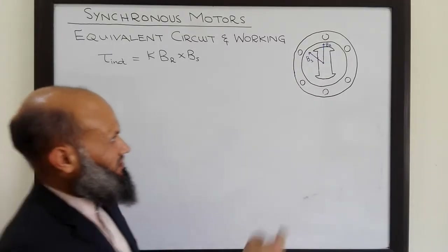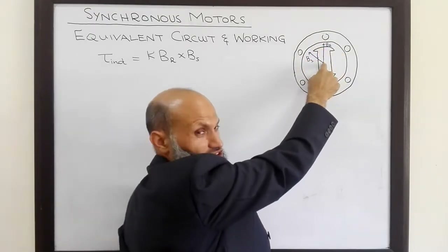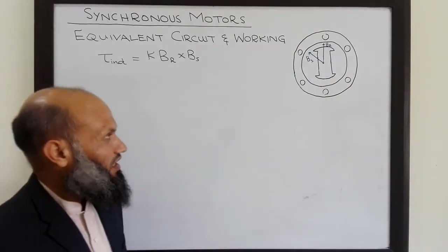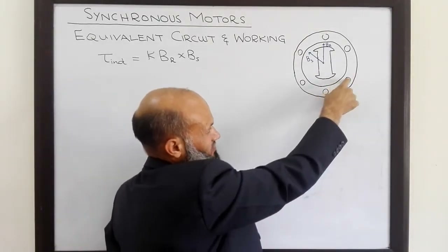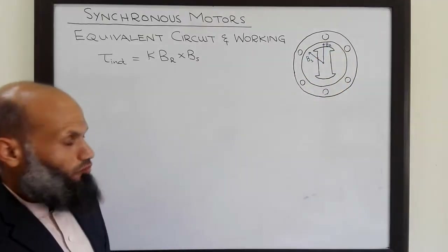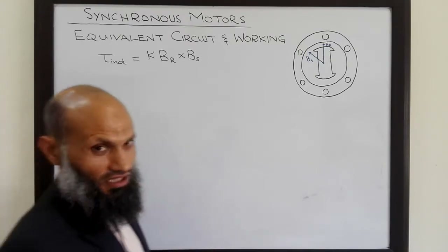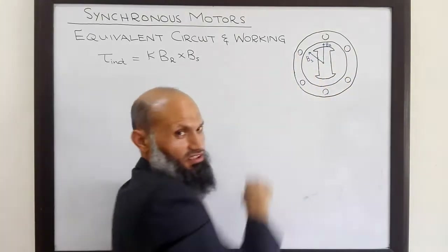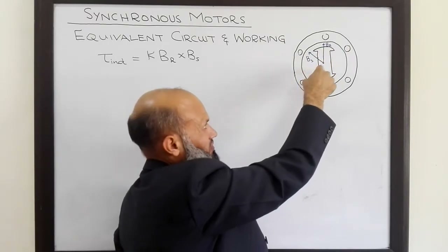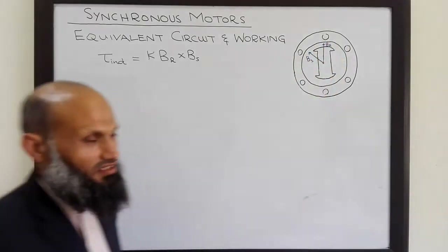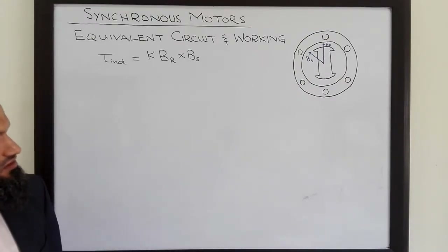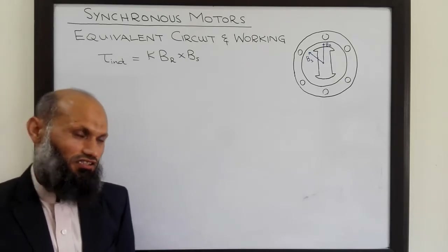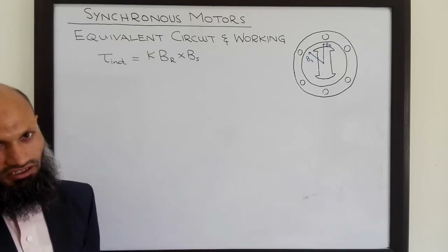The difference is: in the case of generators, we connect some kind of mechanical arrangement — a prime mover — which rotates the rotor, and that rotating magnetic field of the rotor induces three-phase voltages in the coils. When a load is connected to the generator, current starts flowing in the coils and induces a stator magnetic field. So both in generators and motors there are two magnetic fields: rotor magnetic field and stator magnetic field. In motors, we supply currents to the three-phase coils, which induces the rotating magnetic field. Since the construction of synchronous motors is quite similar to that of synchronous generators, the equivalent electrical circuit of the synchronous motor is also quite similar to that of synchronous generators.